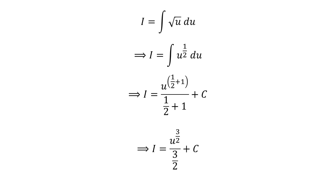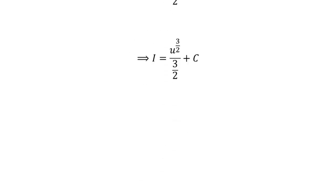As 1 plus half is equal to 3 upon 2, so the exponent of u is 3 upon 2 and the denominator is 3 upon 2. Further simplification gave us I is equal to 2 times square root of cube of u upon 3 plus capital C.